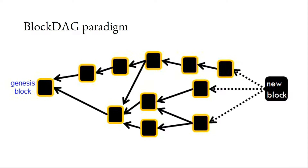As most of you know, the operation of Bitcoin is a blockchain — a chain of blocks. When a miner gets a block, it extends the tip of the chain. But in the block DAG paradigm, instead of extending a single chain of blocks, this new block extends the entire graph of blocks it observes. So this is the block DAG paradigm.